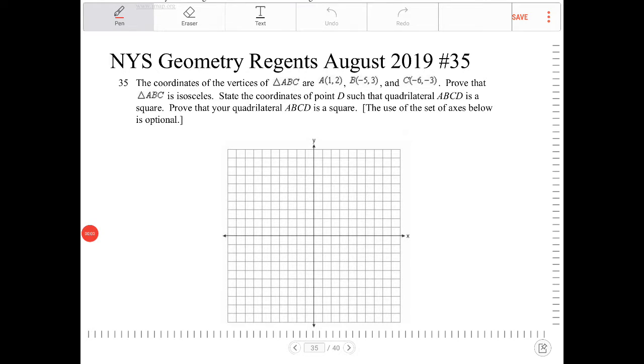The coordinates of vertices triangle ABC are A(1,2), B(-5,3), and C(-6,-3). Prove that triangle ABC is isosceles. State the coordinates of point D such that quadrilateral ABCD is a square. Prove that your quadrilateral ABCD is a square.